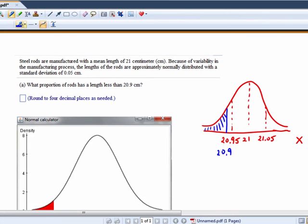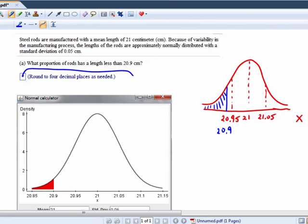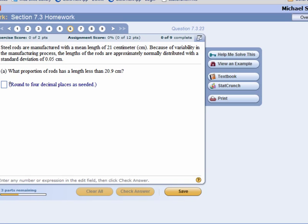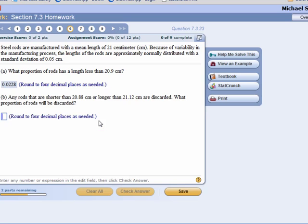And so our answer right there would be - what do we get? 0.0228. Okay, 0.0228, fantastic.